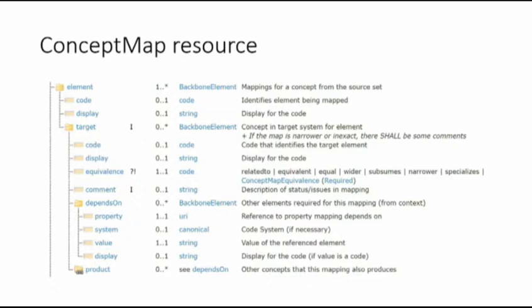For this, you have an element with a code — your LOINC code — along with its display, because not everyone remembers every LOINC code. It has targets in SNOMED CT, and you describe what kind of relationship they are: equivalent, wider, narrower, or even asserting they're not related. You can make a comment about the mapping. For complicated cases, you can say that if another value is present, the mapping might differ. But the simple case is: this maps to this concept.